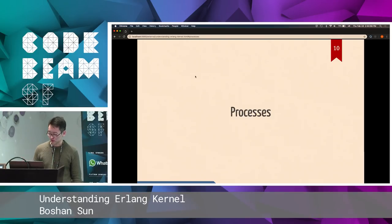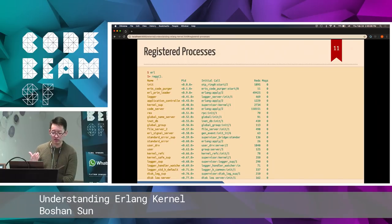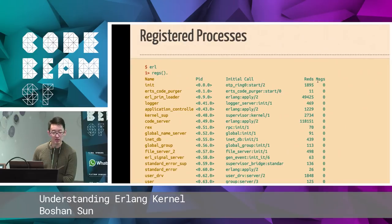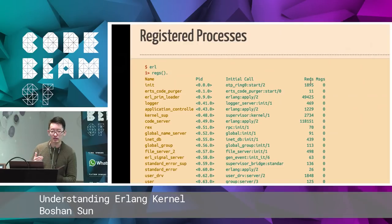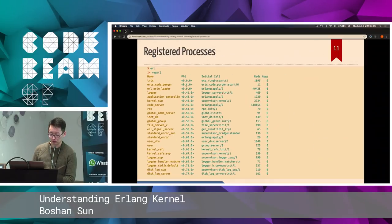Let's see how many registered processes there are when we start an Erlang beam. When we type 'regs', it shows you the registered named processes in your Erlang instance. It has a name, the PID, initial call, reductions, and messages. Message zero means there are no lingering messages, which is good. Reductions are roughly how many times that code has been executed — it gives you a rough idea of how busy that process is. The PIDs go from zero up to 77.